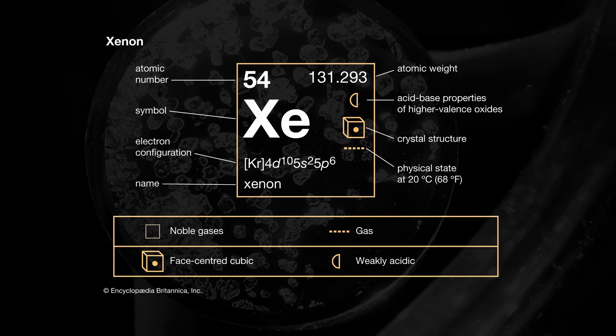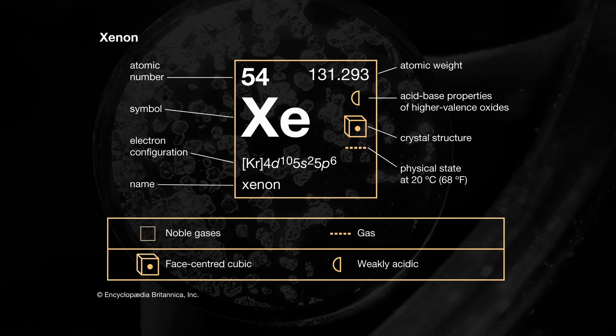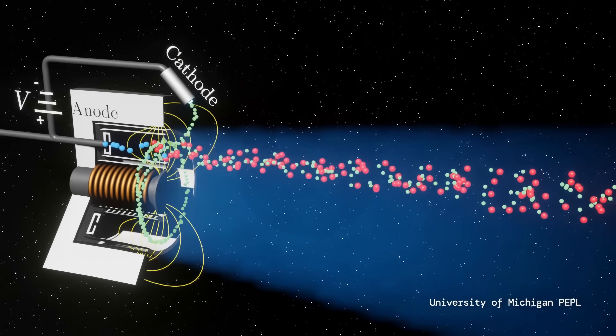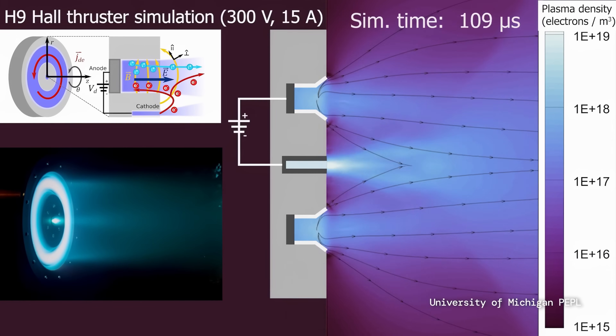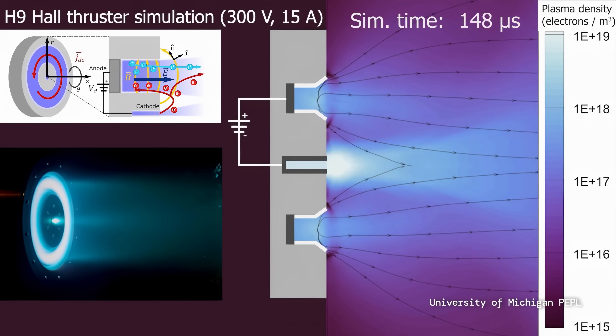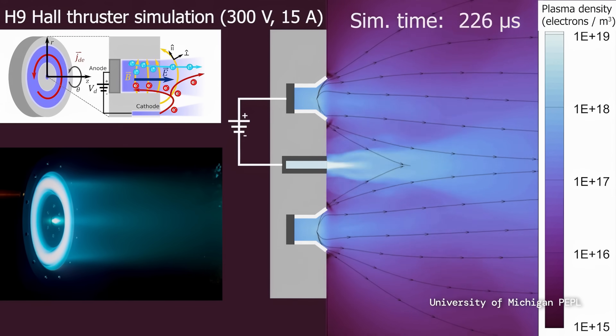The thrust is entirely dependent on how much power you can provide and which noble gas you ionize. Xenon is one option — possibly the most expensive, but because it has the heaviest atomic mass, it gets the most thrust. If you can make your engine work with Argon or Krypton, you can trade off lower propellant cost for lower thrust overall.